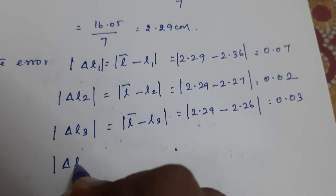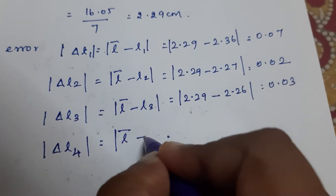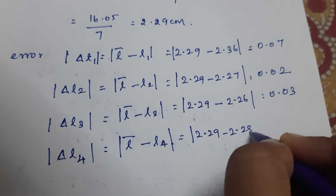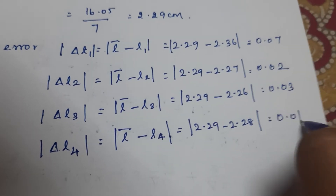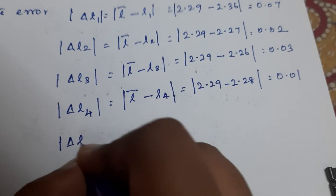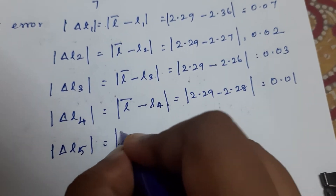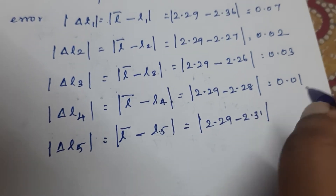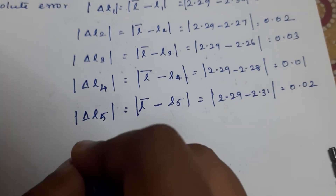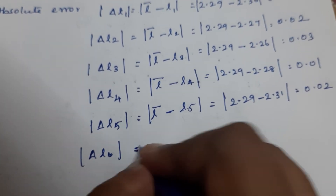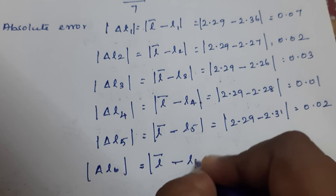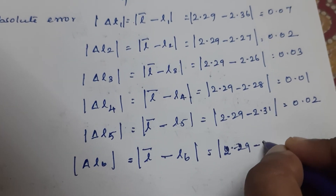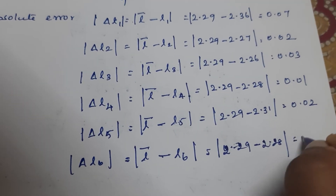|ΔL₄| = |L̄ − L₄| = |2.29 − 2.28| = 0.01. Then |ΔL₅| = |L̄ − L₅| = |2.29 − 2.31| = 0.02. And |ΔL₆| = |L̄ − L₆| = |2.29 − 2.28| = 0.01.